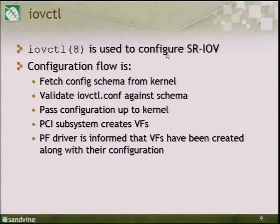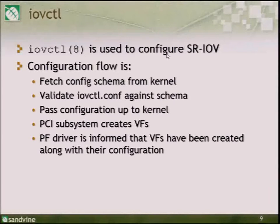There are device-specific settings like MAC address and security parameters around spoofing, promiscuous mode, and so on. The security parameters all have default values because they're Booleans — it has to be yes or no for promiscuous mode. The MAC address can be left unspecified, in which case the VF or VM will choose one. The iovctl tool is also used to configure SR-IOV. There's an RC script that runs it during boot. The configuration flow gets the schema from the kernel provided by the driver, validates it in userland for better error messages, then passes configuration to the kernel.